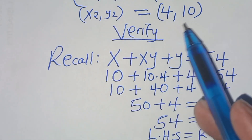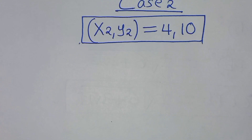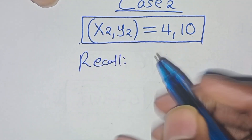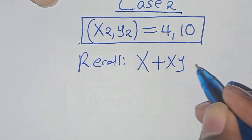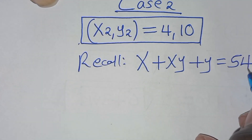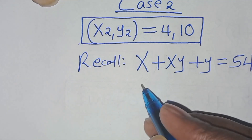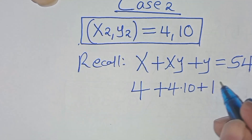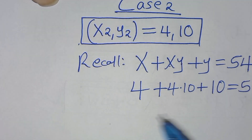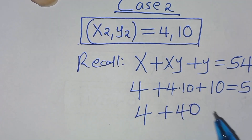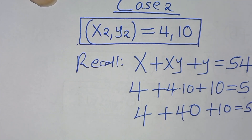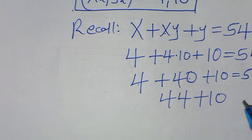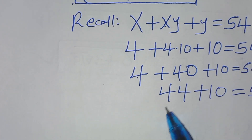Let's check x2 and y2. With x2, y2 being 4 and 10, we substitute into x plus xy plus y: we have 4 plus 4 times 10 plus 10. So we have 4 plus 40 plus 10. This is 44 plus 10, which gives us 54. So 44 plus 10 equals 54, confirming that both solutions satisfy the original equation.